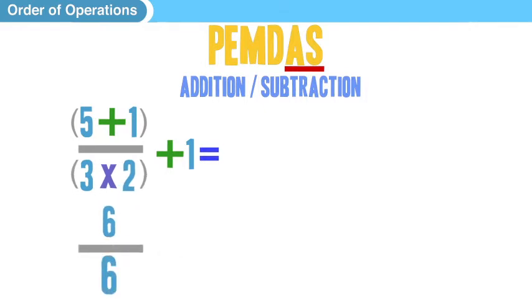So look at that. We have 6 divided by 6 plus 1. So now we do our multiplication or division, because there aren't any exponents. And we see that 6 divided by 6 is actually 1. So this turns into, very simply, 1 plus 1.